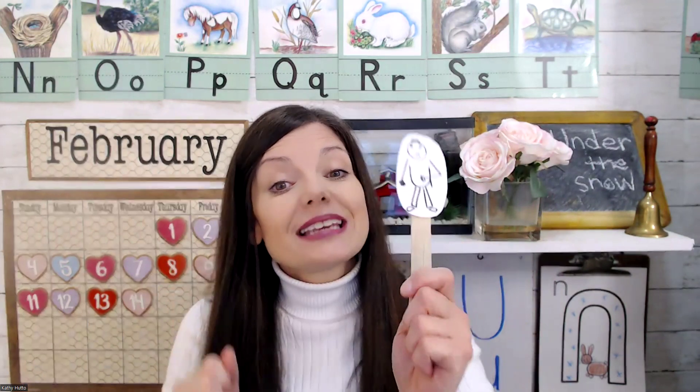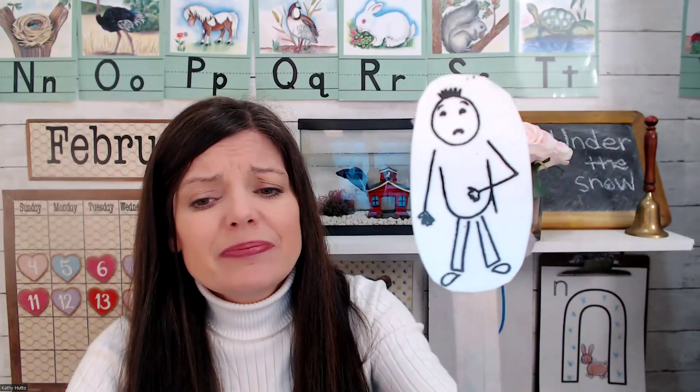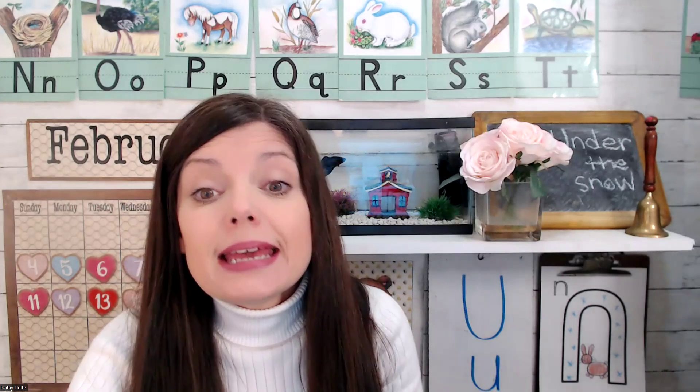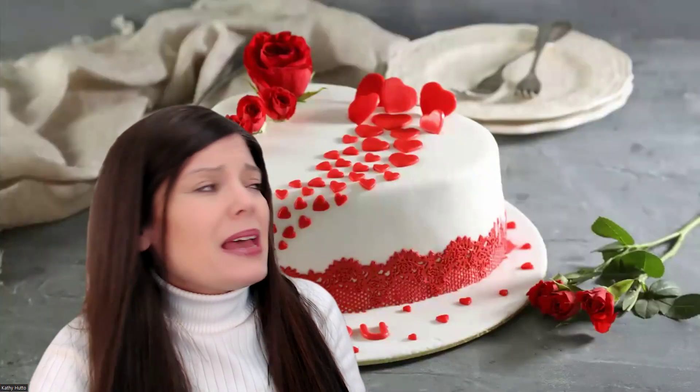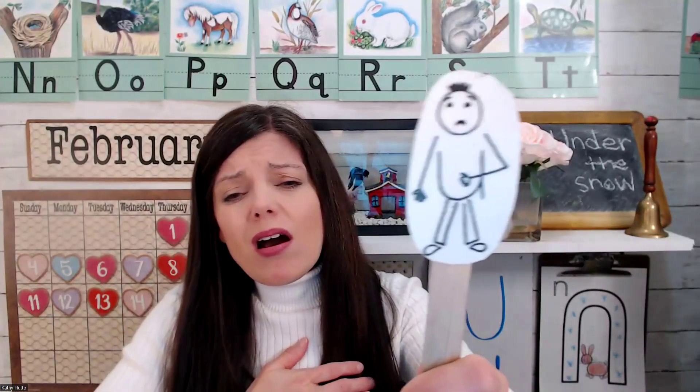Whenever we talk about a vowel, we always get a visit from one of the vowel people. And here he is, but he doesn't look so great. He has a tummy ache. Do you know why? Because he ate chocolate candies, and he ate more candies and lollipops, cupcakes and cookies, and cake. When he ate all those sweet treats, it made his tummy hurt. And now my friend U says, uh, uh, uh.